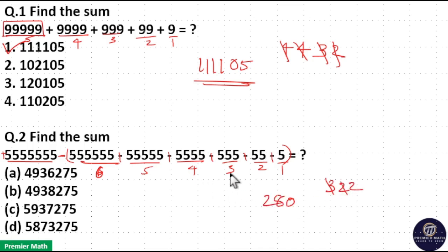5 into 3, 15 plus 2, 17. Remaining 1. 5 into 2, 10 plus 1, 11. Remaining 1. 5 into 1 plus 1, 6. Now this is negative term.